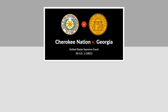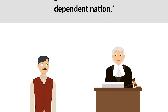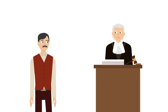In 1831, the Supreme Court decided the case of Cherokee Nation v. Georgia, which determined the status of the Cherokee Nation. The court held that the Cherokee weren't an independent sovereign nation, but rather a "domestic dependent nation." The consequences of that ruling were quickly put to the test.